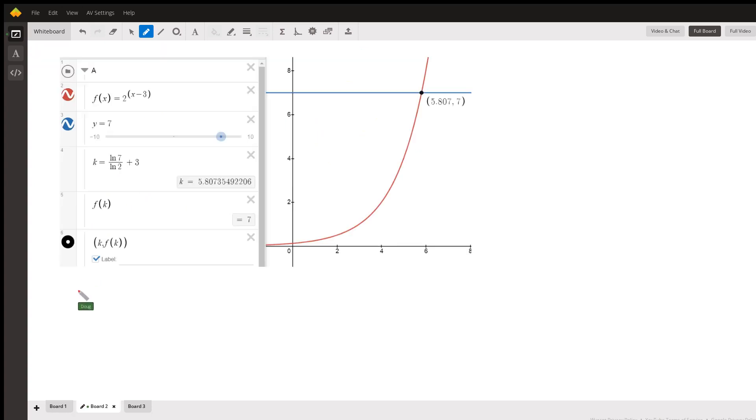And here's kind of a picture that proves the point. This red graph is the graph of 2 to the x minus 3. The blue graph is the line y equals 7. And they intersect at the point 5.807 comma 7. And that is actually close to the value of ln of 7 divided by ln of 2 plus 3, which is 5.807 dot dot dot.